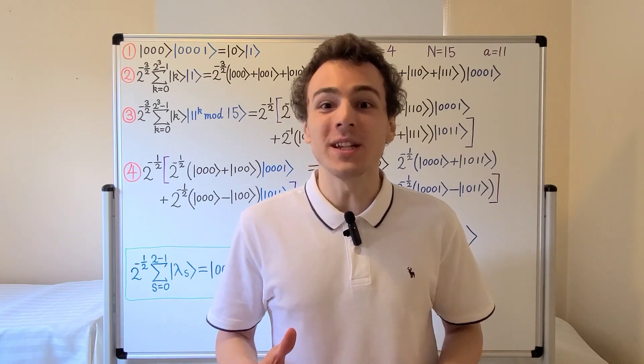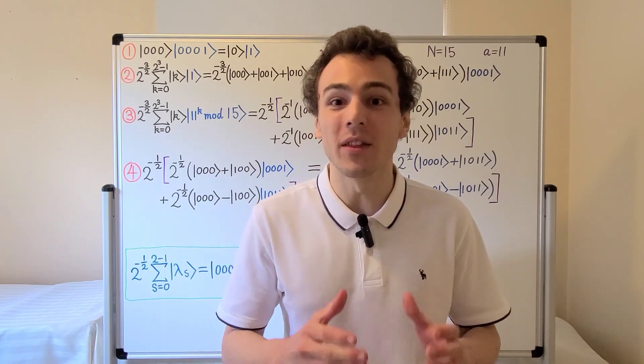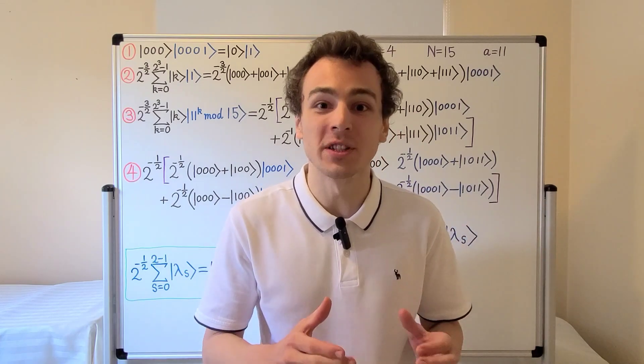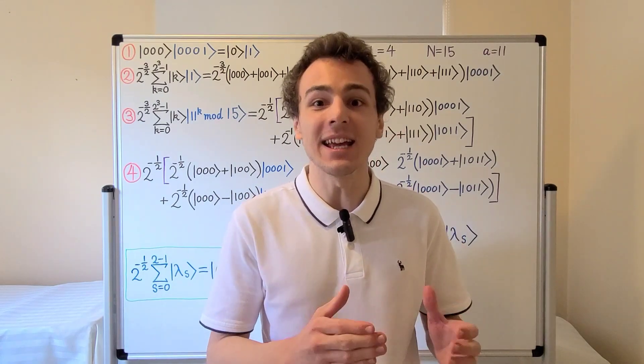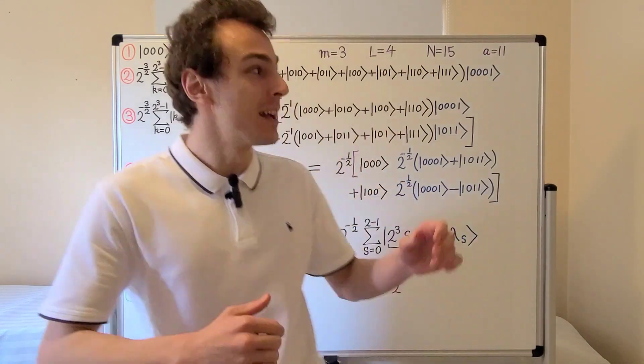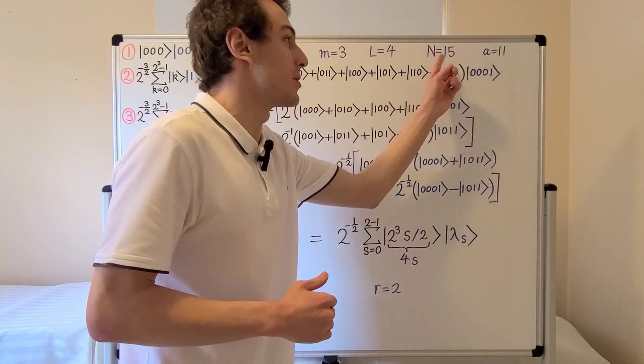In this video we're going to see an example of the quantum order finding subroutine of Shor's factoring algorithm for the inputs N equals 15 and A equals 11. These are our input values.